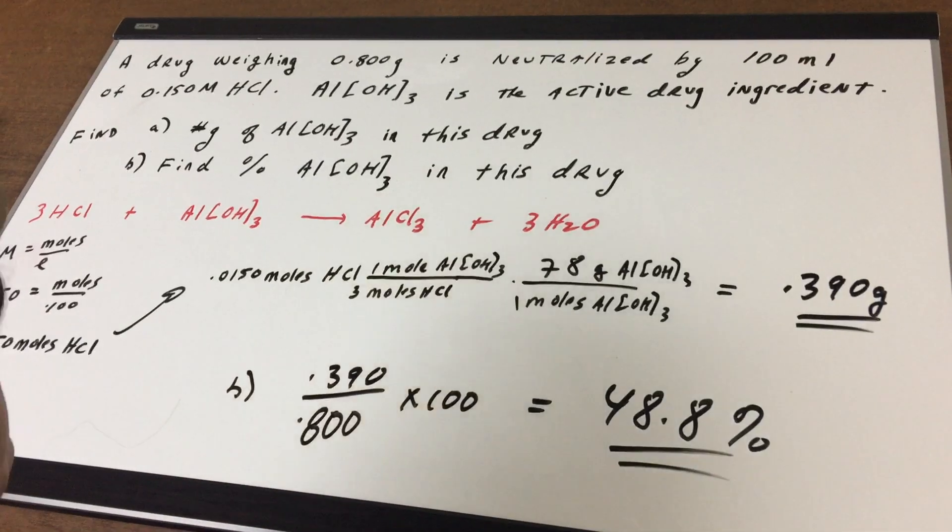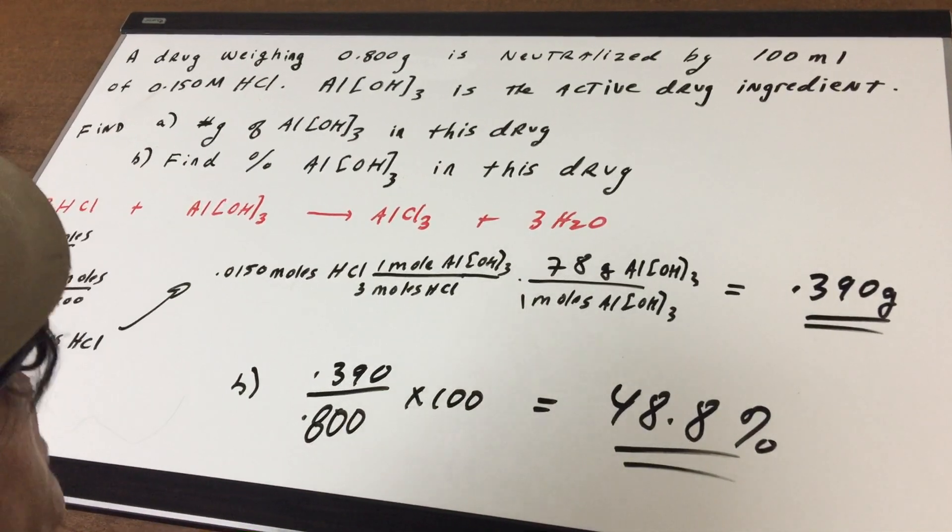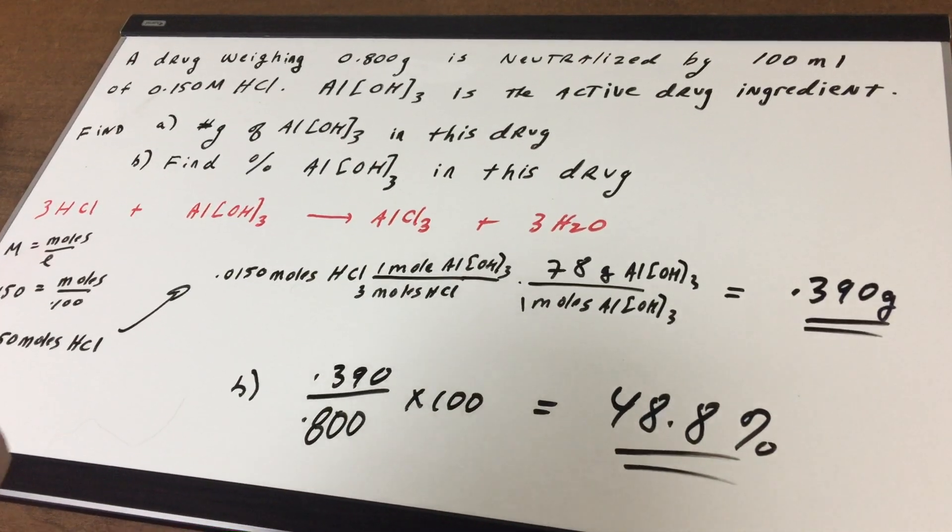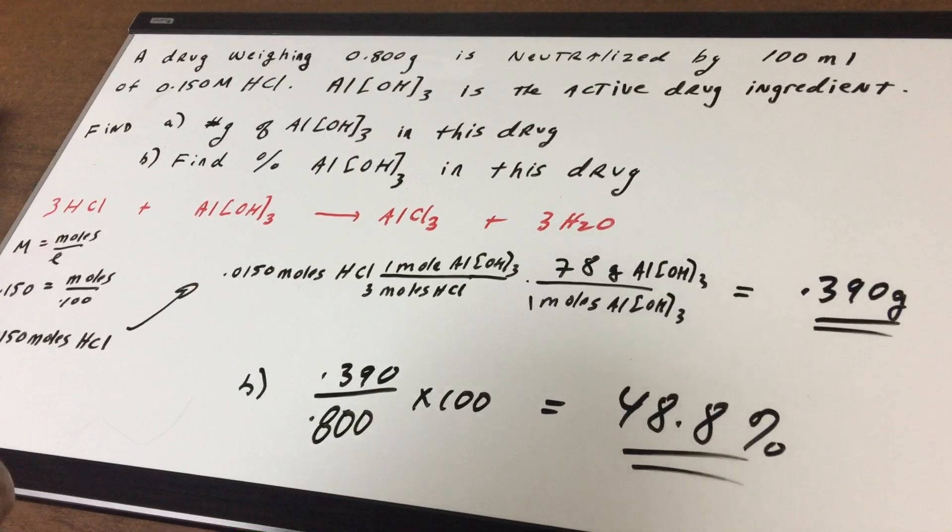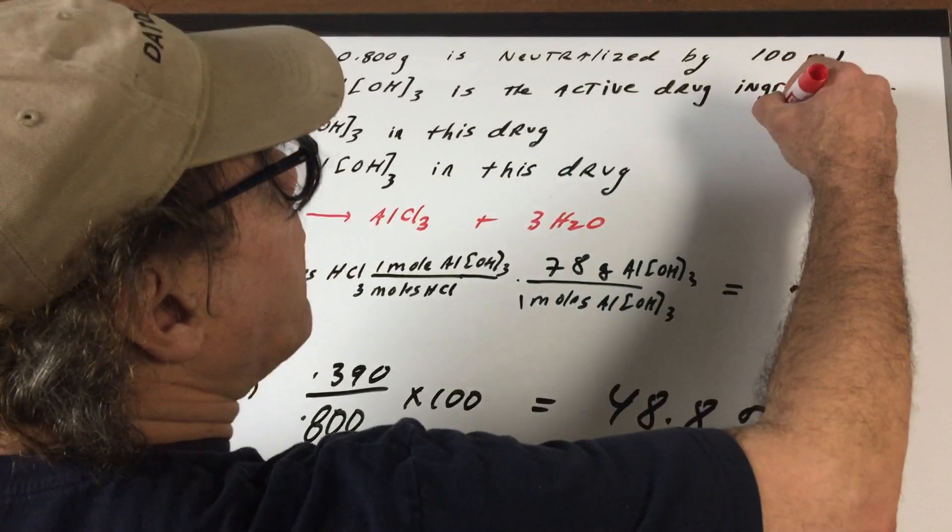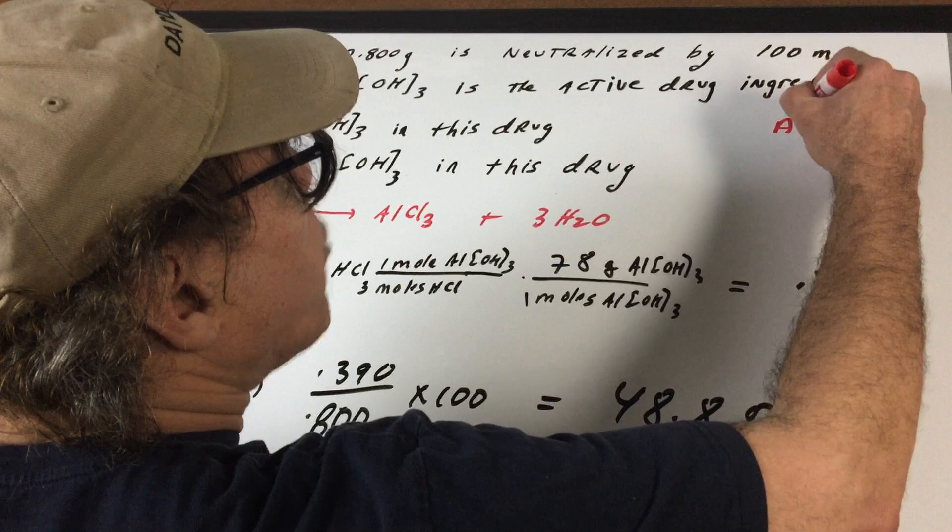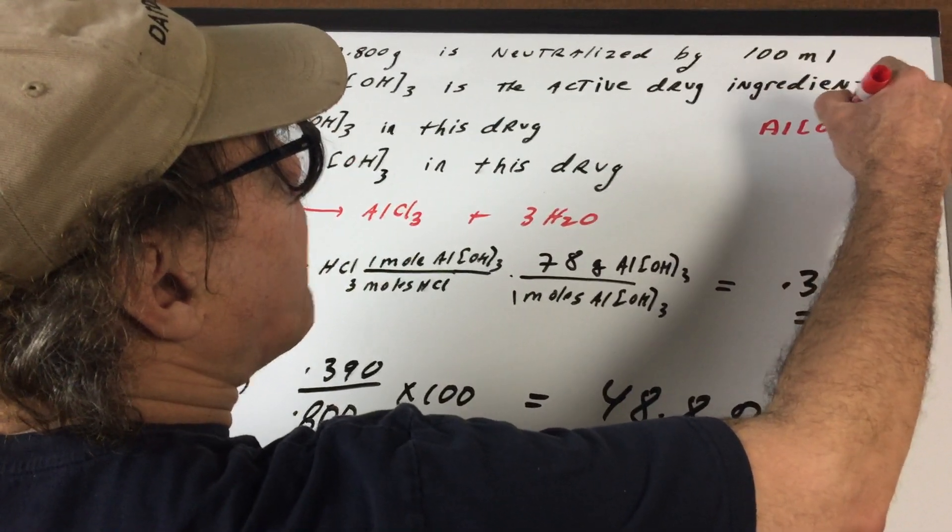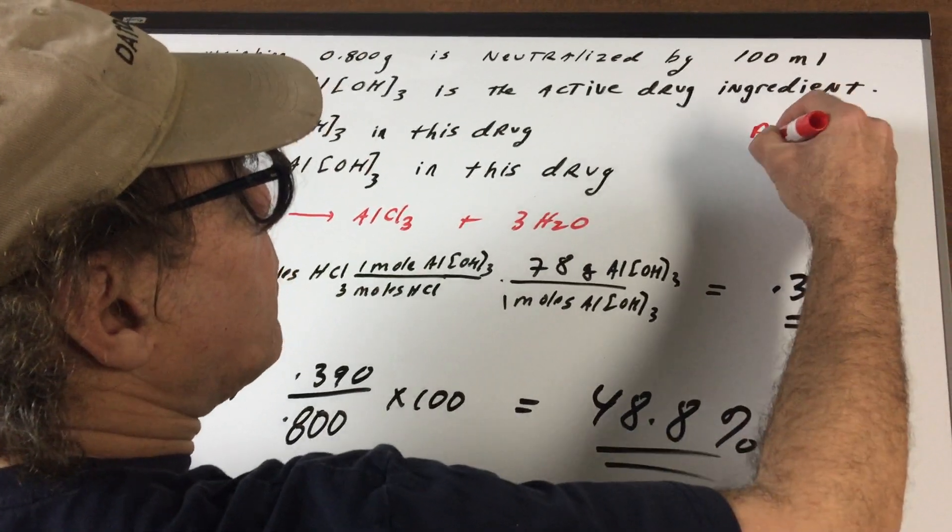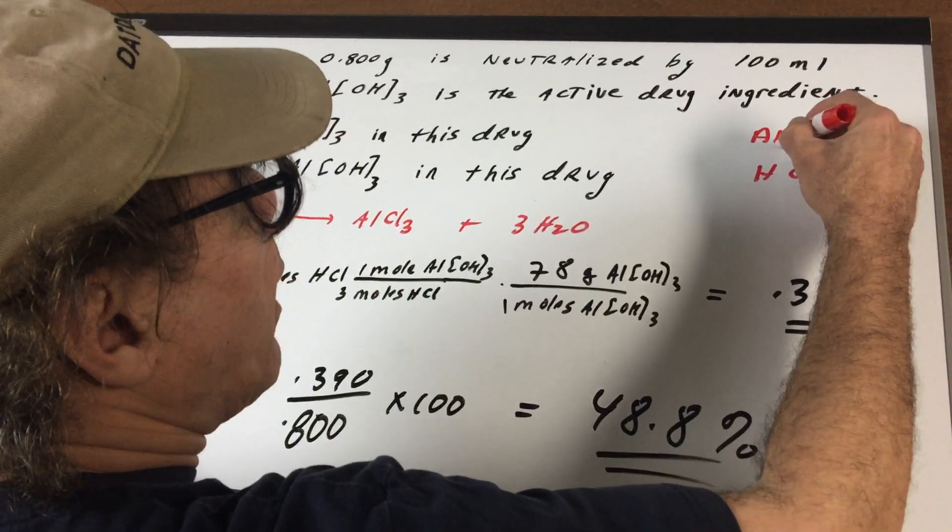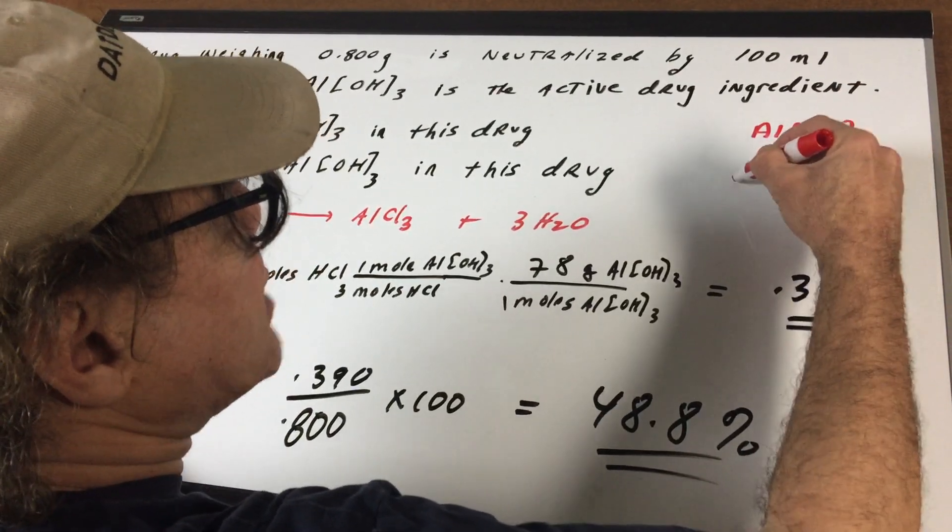Where do I begin? The first thing we need to write the reaction. What happens when HCl reacts with aluminum hydroxide? I'm going to show you a nice trick. What you would do is if you wrote aluminum hydroxide up here, and you wrote HCl down here and you crisscross this.